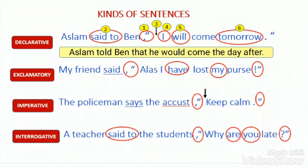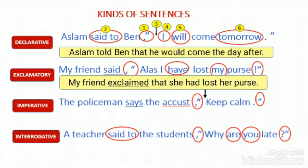Exclamatory sentence — Direct speech: 'My friend said, Alas! I have lost my purse.' We change this to indirect speech. As per the rules, we remove all commas and quotations. We change the verb form: 'said' into 'exclaimed,' as it is an exclamatory sentence. We add the conjunction 'that.' We change the pronoun 'I' into 'she.' We change the tense: 'have' into 'had.' Result: 'My friend exclaimed that she had lost her purse.'